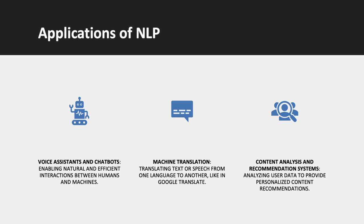Machine translation is a remarkable application of NLP, enabling the translation of text or speech from one language to another. Tools like Google Translate exemplify this advancement, allowing users to instantly translate words, sentences, and even entire documents between multiple languages. NLP technologies, including statistical machine translation and neural machine translation, have significantly improved the accuracy and fluency of translations. These advancements have broken down language barriers, facilitating global communication and access to information across different languages.